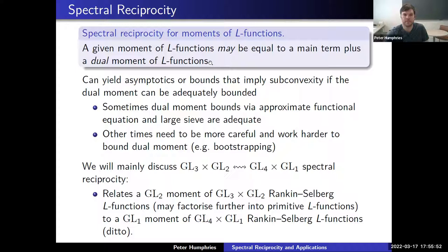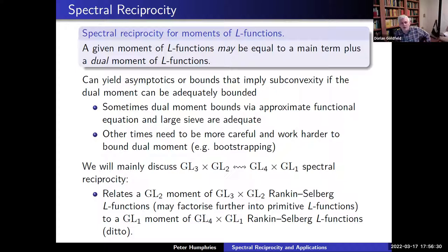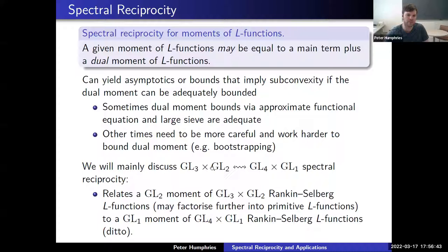In certain situations these dual moments are more easily understood than the initial moment we started with. I'll focus today on the type GL(3)×GL(2) equals GL(4)×GL(1): identities where you start with a GL(2) moment of GL(3)×GL(2) Rankin-Selberg L-functions and end up with a GL(1) moment of GL(4)×GL(1) L-functions. In many of these cases the L-functions may factorize into simpler L-functions. Is this possible because 3+2 equals 4+1? There's also a case where there's GL(4)×GL(2) and GL(4)×GL(2) — a reciprocity formula in that case. I don't know the general numerology of when to expect these things.